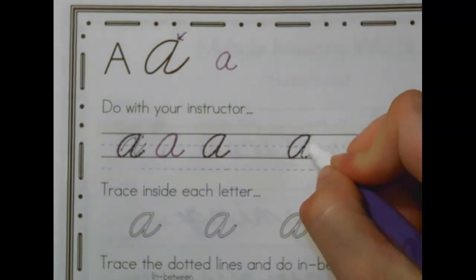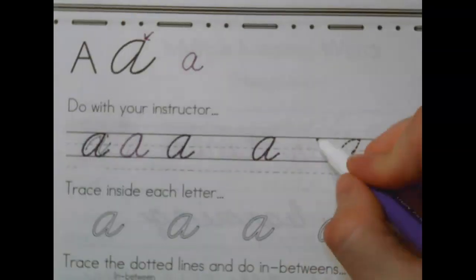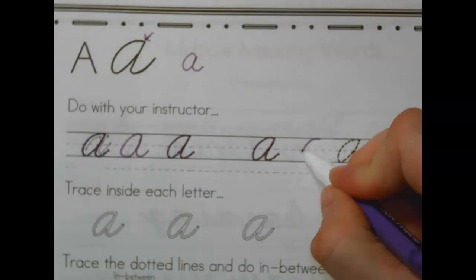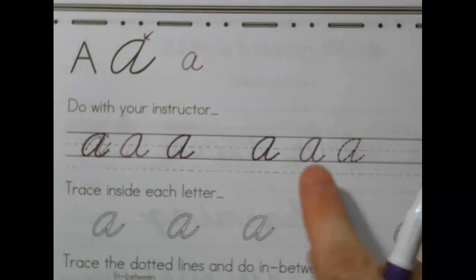Before we do that last one, let's do an in-between. Ready? Start at the top, curve down to the bottom, curve back up to make like a teardrop, ninja down and connect. And if you notice, I don't know if you notice on mine, my second one is already better than my first one because my hand had more practice. That's why we always trace it before we write it on our own.